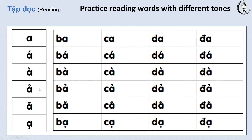For dấu hỏi and the letter A, remember — your voice goes up like you are asking a question. Hả? Ả. Bả. Cả. Giả. Đả.